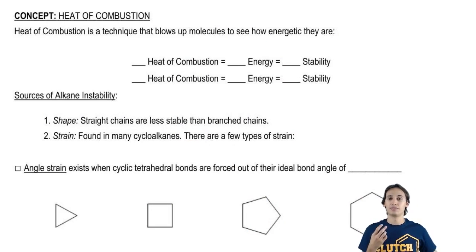Basically the theory behind it is this: the higher the heat of combustion, or basically the more heat that's released by the explosion, the higher the energy of the molecule. And if the energy is very high, that means we would expect it to not be very stable.